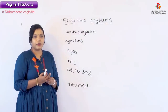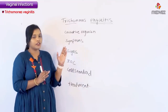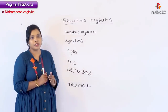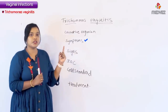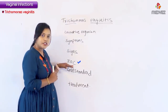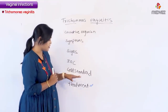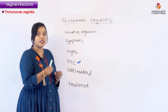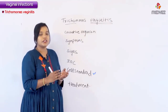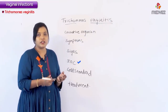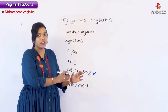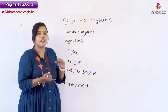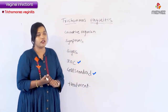Today I'm going to discuss about infections of the vagina. The first topic is trichomonas vaginitis. All the infections I'm going to discuss under the headings of: causative organism, symptoms, signs, investigation of choice, gold standard investigation, and treatment. In MCQs, investigation of choice is what is more feasible, while gold standard is what gives you 100% accurate results. You should be aware whether they're asking for investigation of choice or gold standard.